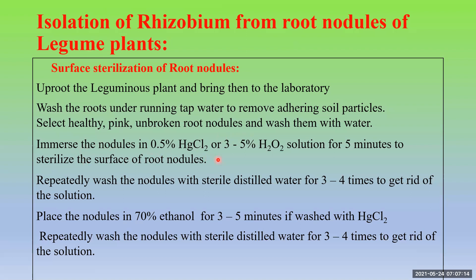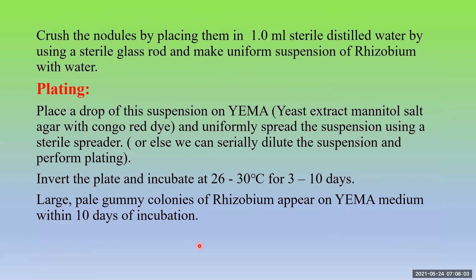Immerse the nodules in 0.5% mercury chloride (HgCl₂) solution or 3 to 5% H₂O₂ solution for 5 minutes to sterilize the surface of the root nodules. Then repeatedly wash the nodules with sterile distilled water 3 to 4 times to get rid of this chemical. If you have washed your nodules with HgCl₂, then place the nodules in 70% ethanol for 3 to 5 minutes, then repeatedly wash again with sterile distilled water 3 to 4 times to get rid of all the chemicals. The surface of the root nodules is now sterile and free from any contaminating bacteria present in the soil.